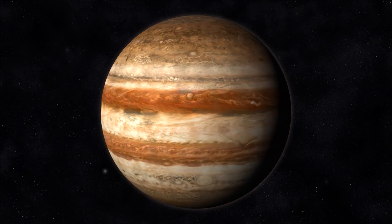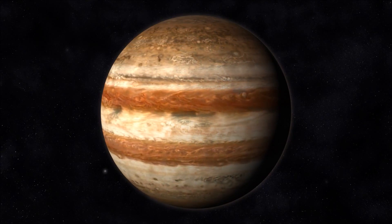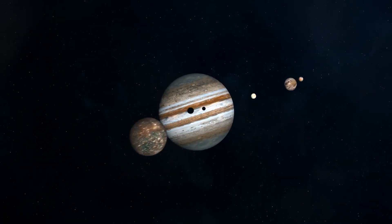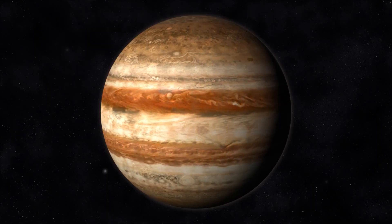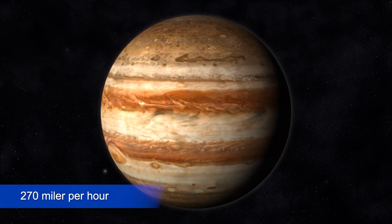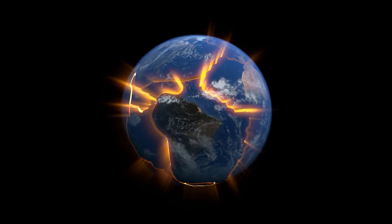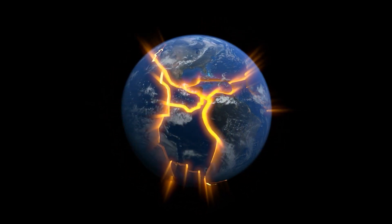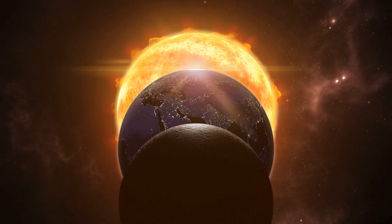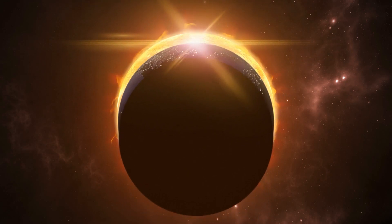Jupiter's Great Red Spot is a massive storm that has lasted for ages and is one of its most spectacular features. With winds in excess of 270 miles per hour, this enormous storm, more than twice the size of Earth, is one of the solar system's most potent natural occurrences.